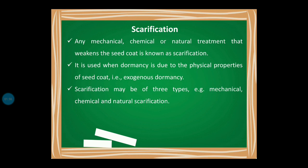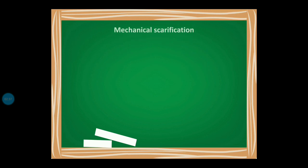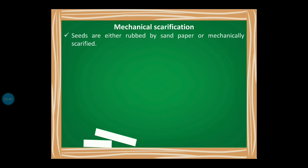Scarification is when the seed coat is weakened by any method — whether done mechanically, chemically, or naturally. Basically, scarification is used only when dormancy is due to the physical properties of the seed coat. So when we talk about exogenous dormancy, as discussed in part two, we use scarification. Scarification may be of three types: mechanical, chemical, and natural scarification.